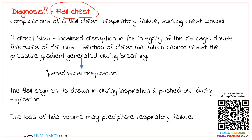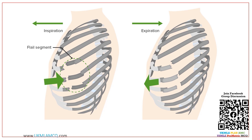Flail chest occurs when three or more ribs are broken at two or more places. As illustrated in this picture, the flail segment moves inward when the patient inspires — drawn toward the chest cavity due to pressure — and moves outward when the patient expires. This is called paradoxical breathing.